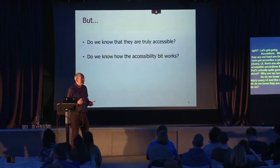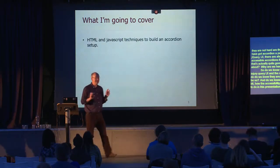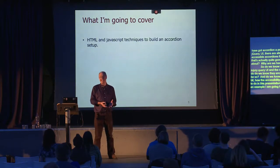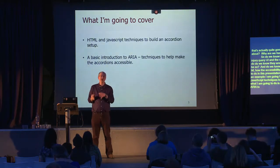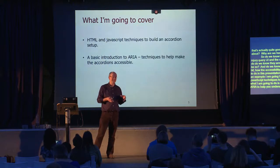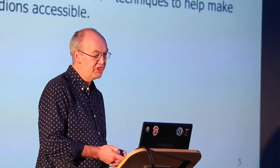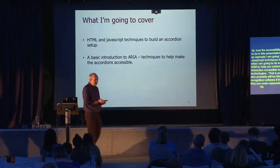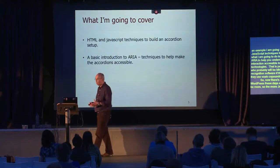Do we know that those accessible patterns in jQuery UI and other available libraries are truly accessible? And, most importantly, do we know how the accessibility part actually works? What I'm going to do is take accordions as an example and go through the HTML and JavaScript techniques to build a simple accordion, providing a basic introduction to ARIA to help you understand how JavaScript interaction is made accessible to assistive technologies — specifically screen reader users and voice recognition software users.